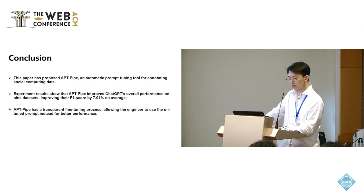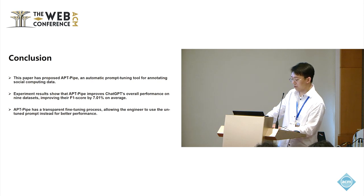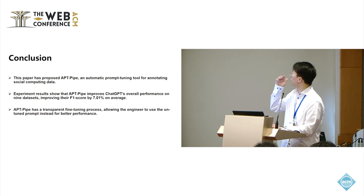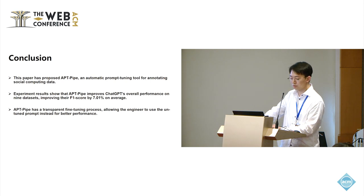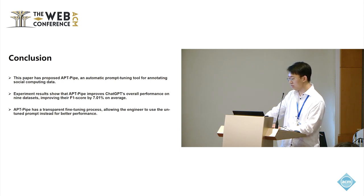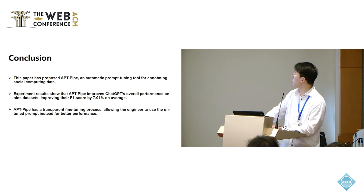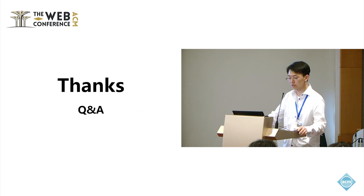In conclusion, this paper proposes APTPipe, an automatic prompt tuning tool for annotating social computing data. Experiment results show that APTPipe improves ChatGPT's overall performance on nine datasets, improving the F1 score by 7.1% on average. APTPipe also has a transparent fine-tuning process, allowing engineers to use the untuned prompt instead when it yields better performance. Thank you — this is all the content of our presentation.